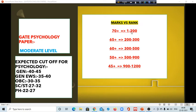If you score 65 plus, your ranking will be from 200 to 300. If your score is above 60 plus, your score will be 300 to 500. If your score is 50 plus, you can get a ranking of 500 to 900. If your score is 45 plus, you can expect your ranking 900 to 1200, and so on.